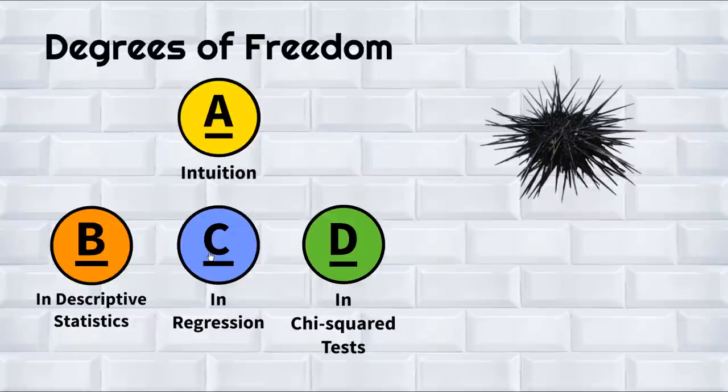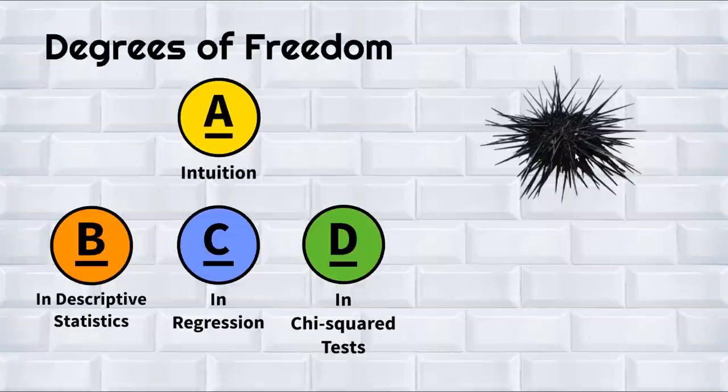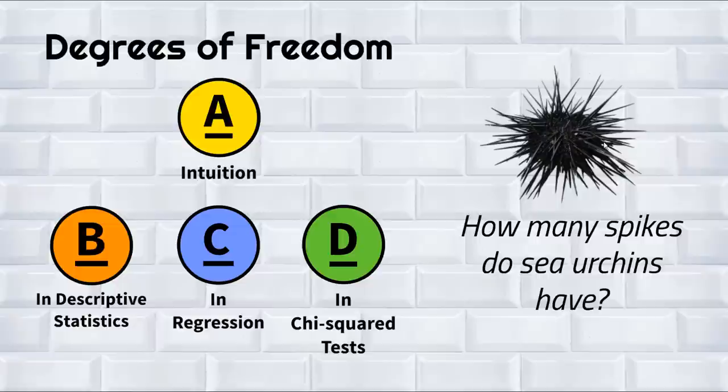You might be wondering what this strange item is here on the right-hand side. It is indeed a sea urchin, which is going to form the subject matter for all the examples in this presentation. Specifically, we're going to try to figure out how many spikes sea urchins have. True story: my brother stepped on one when he was about eight years old, and a full 11 years later they pulled out one of the spikes from his foot. Anyway, let's move into the intuition.